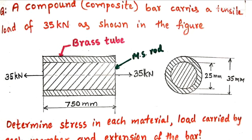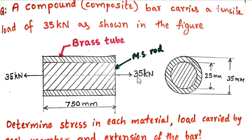We are solving a problem on composite bar from the topic simple stresses and strains. A compound bar carries a tensile load of 35 kN as shown in the figure. It is made up of a mild steel rod inserted in a brass tube, both of the same length — 750 mm. The diameter of the MS rod is 25 mm, which is also the inside diameter of the brass tube, and the external diameter of the brass tube is 35 mm.